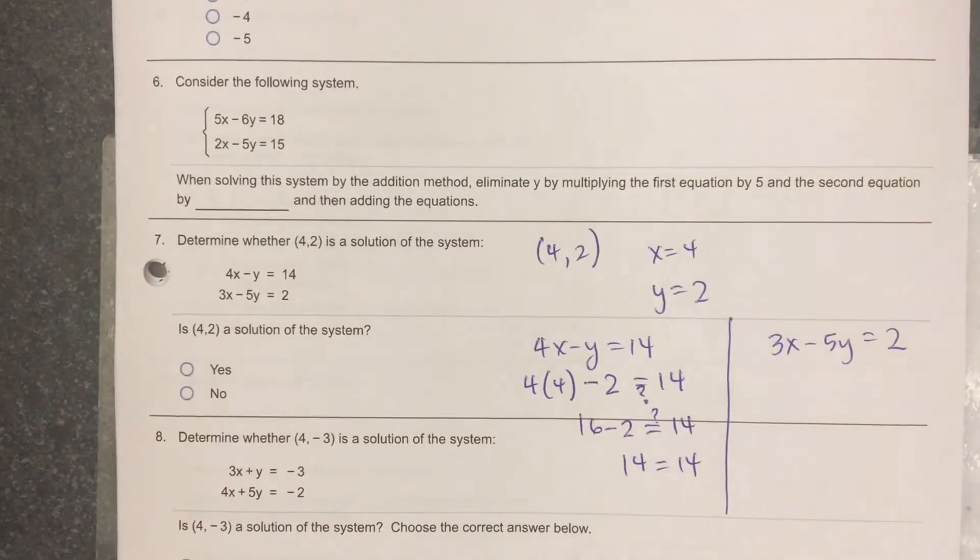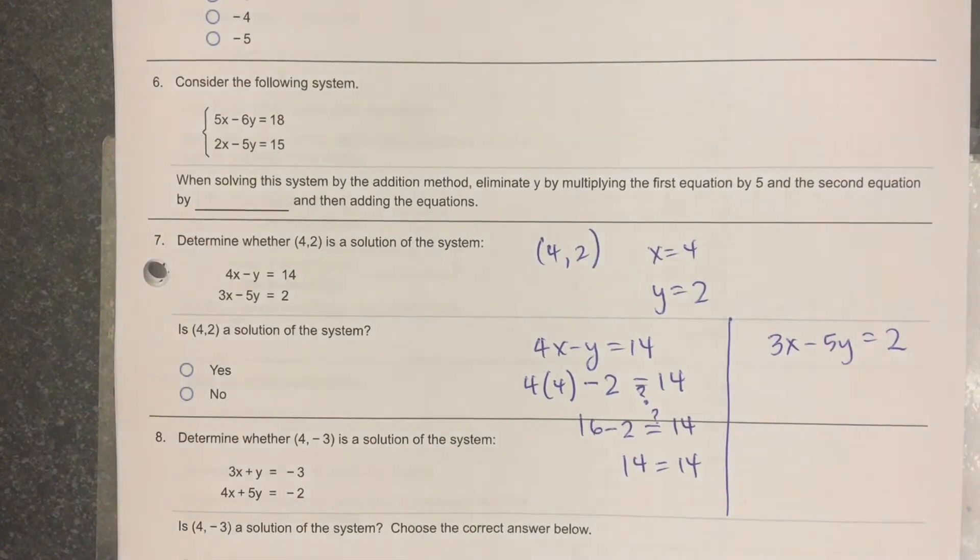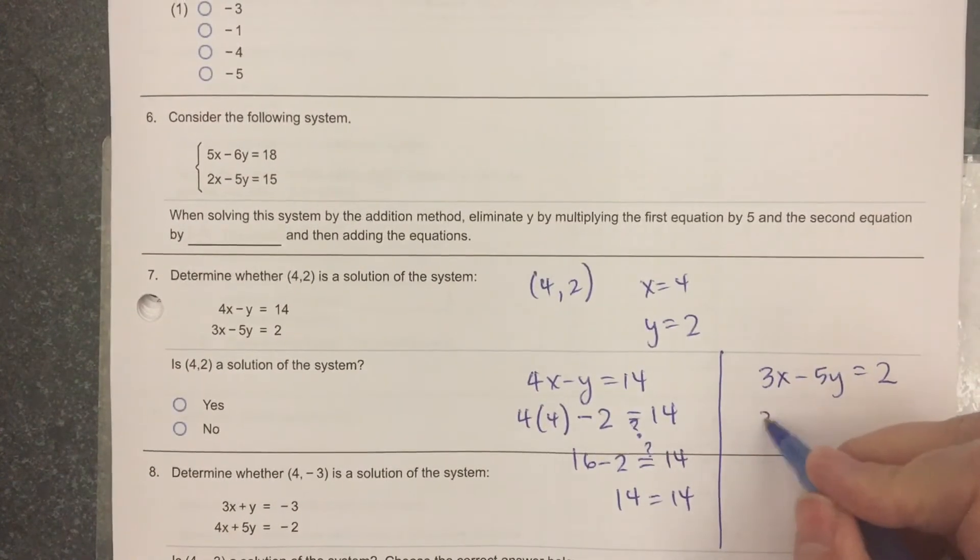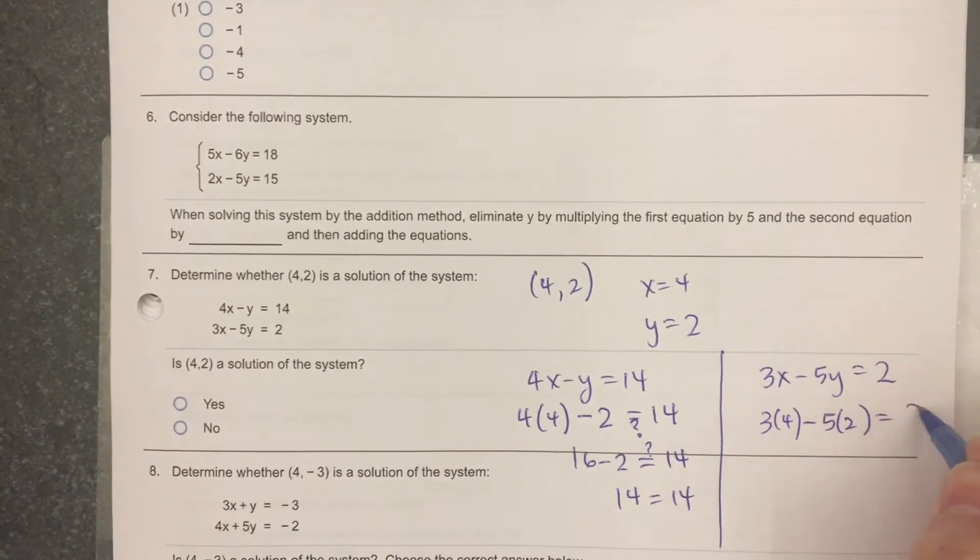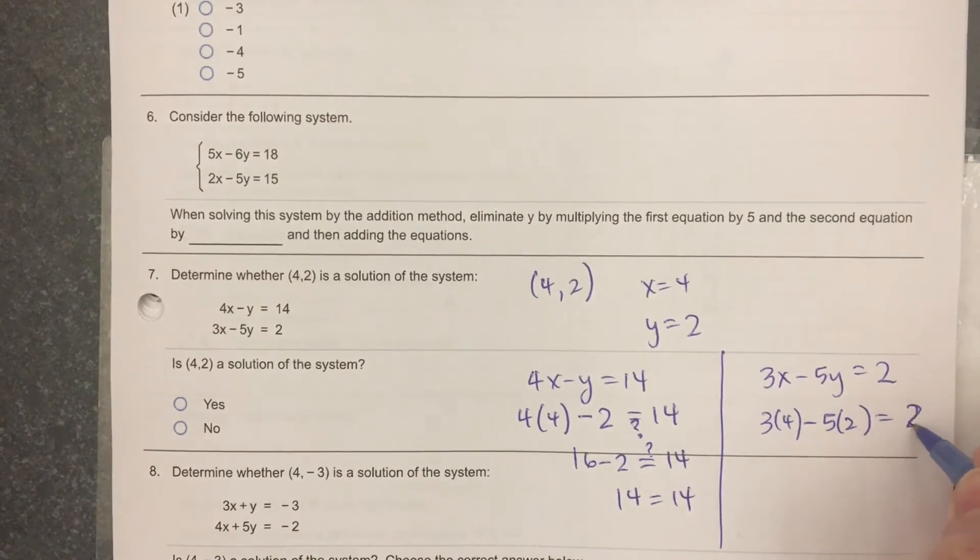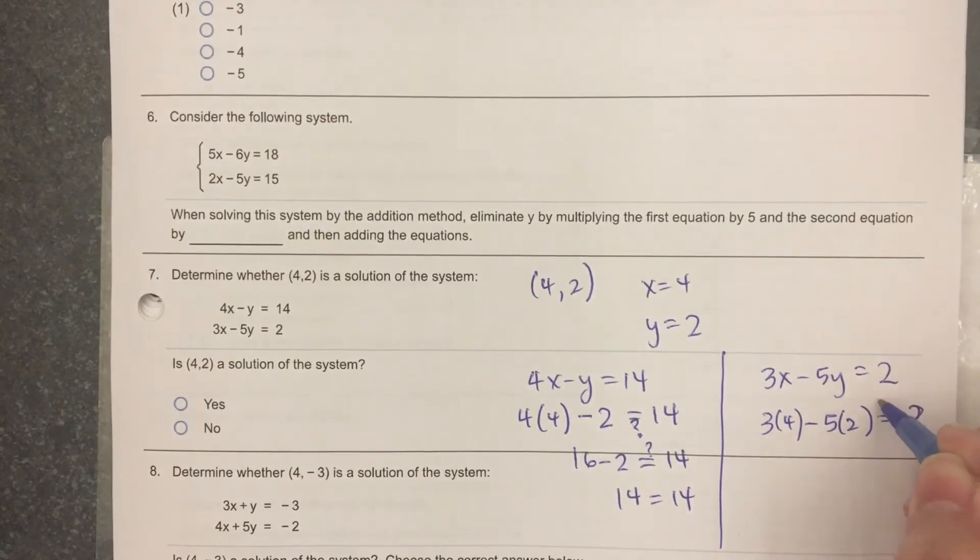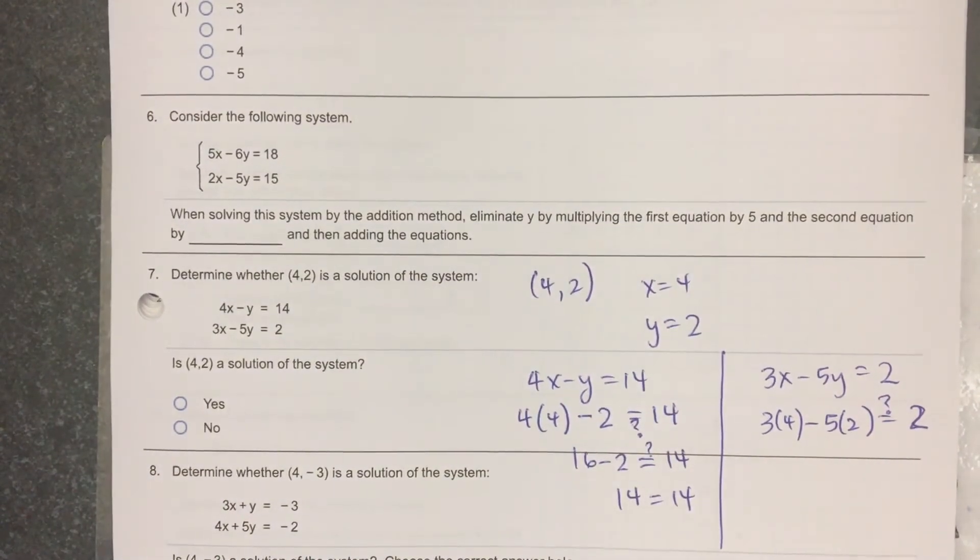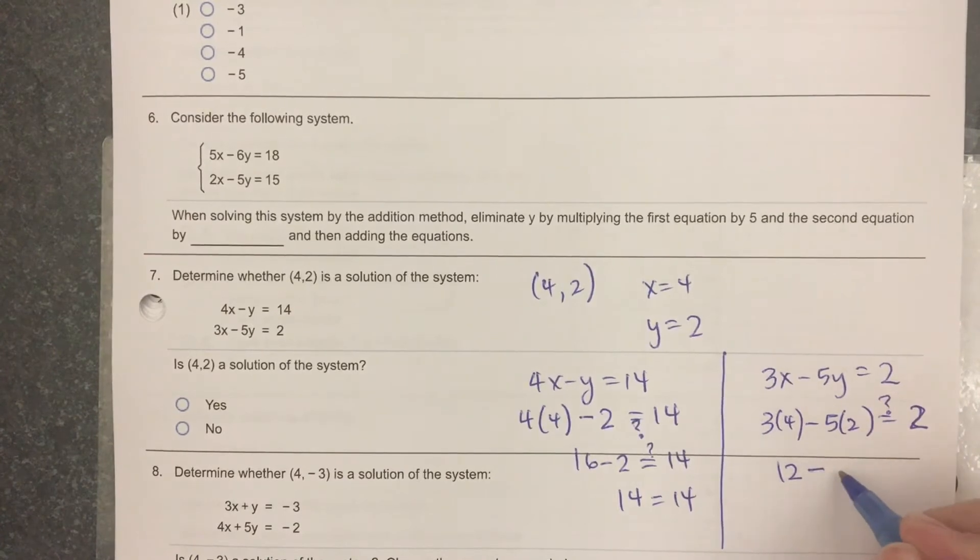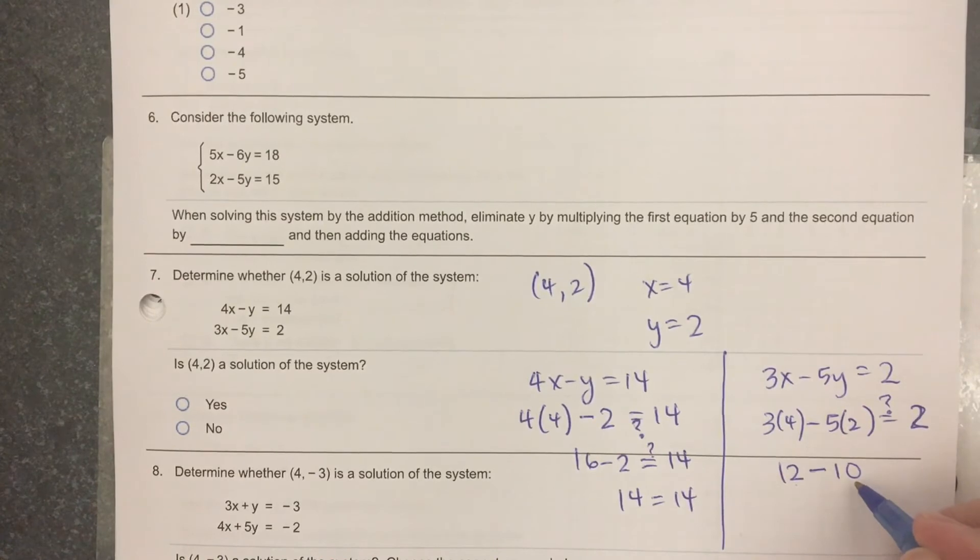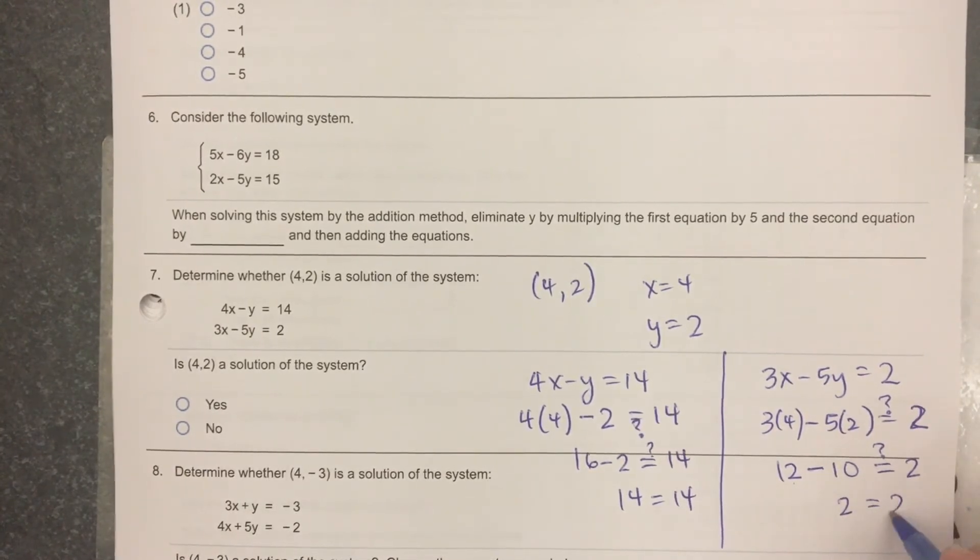I will plug in x equals 4 and y equals 2, and I'll write a question mark above the equal sign. 3 times 4 is 12. 5 times 2 is 10. 12 minus 10, does it equal 2? 12 minus 10 is 2. 2 equals 2.